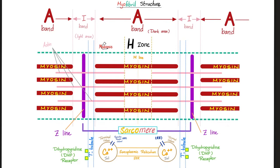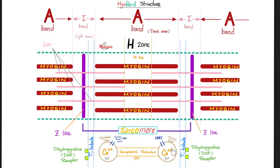Between the A band and the I band, at the AI junction, we have these beautiful transverse tubules or T-tubules. Why transverse? Because they traverse the entire myofibril. These T-tubules have receptors known as dihydropyridine receptors. Some of them are facing one way, others are facing the other way — same thing on both sides of the T-tubule.